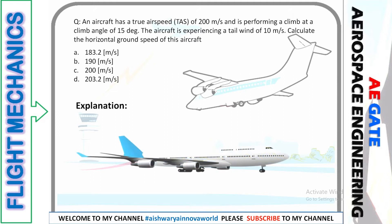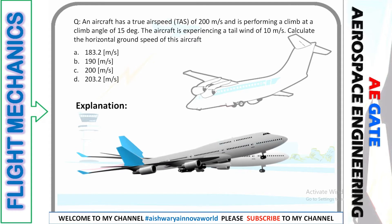Here is the aircraft in horizontal position. The same aircraft will be tilted at a 15 degree angle — here comes the 15 degree angle. The true airspeed is 200 meters per second, there is a tailwind of 10 meters per second, and what we need to find is the ground speed or ground velocity of the aircraft.